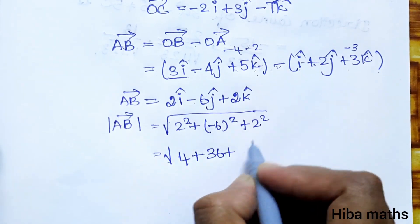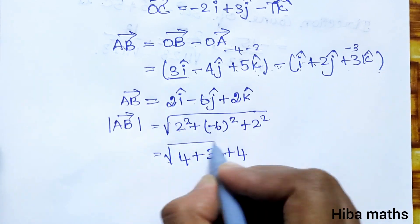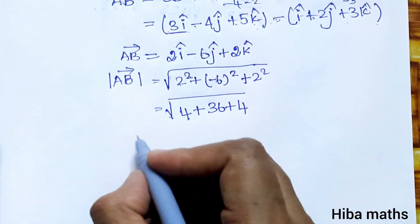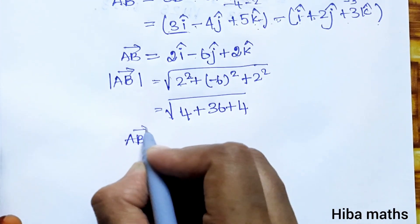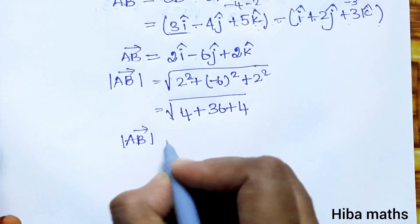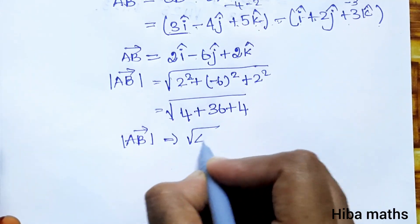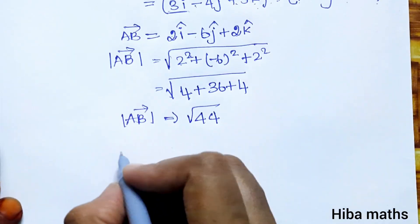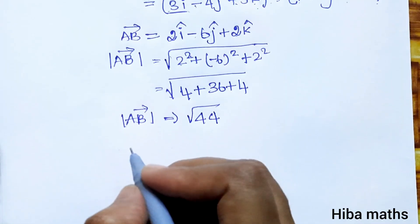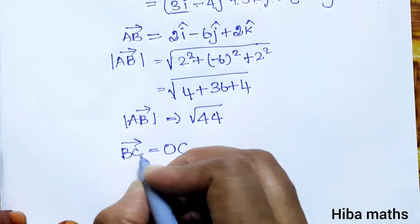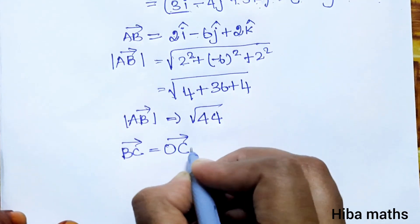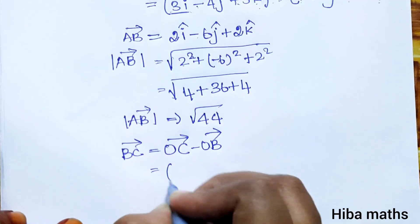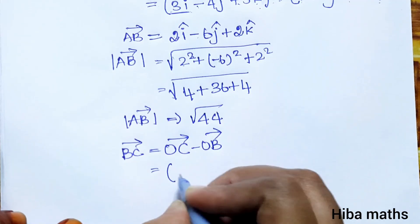The modulus of AB vector is root of 2 squared plus minus 6 squared plus 2 squared, which equals root of 4 plus 36 plus 4 equals root of 44. So the modulus of AB vector is root of 44.